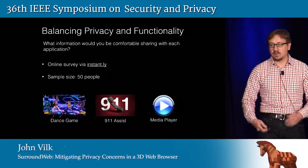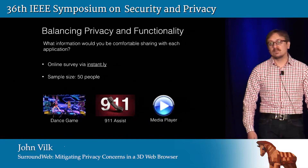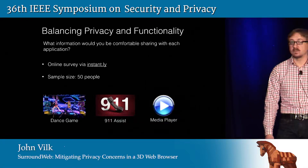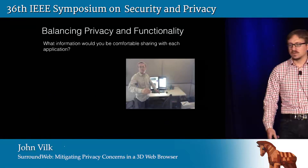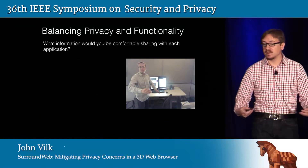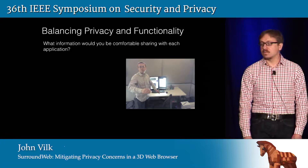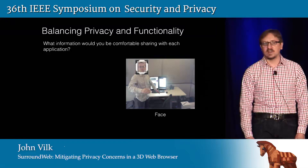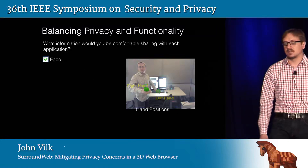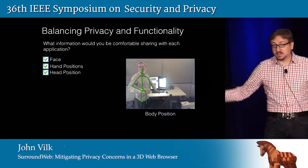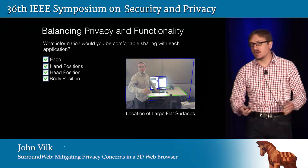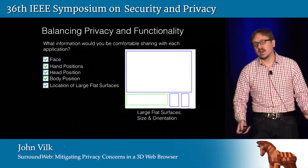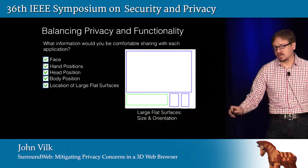We presented participants with three wildly different applications: a dance game, a 911 assist application, and a media player application. We explained immersive experiences to them and asked what information they would be comfortable sharing with each application. We presented each piece of information graphically in the context of an example room to drive home the mapping between data and things in their physical environment. The list included: the face with no location information, position of left and right hand, position of the head, the entire body's position, location of all large flat surfaces in the room — highlighted in blue and green — and finally those same surfaces without any location information, just their size and orientation.